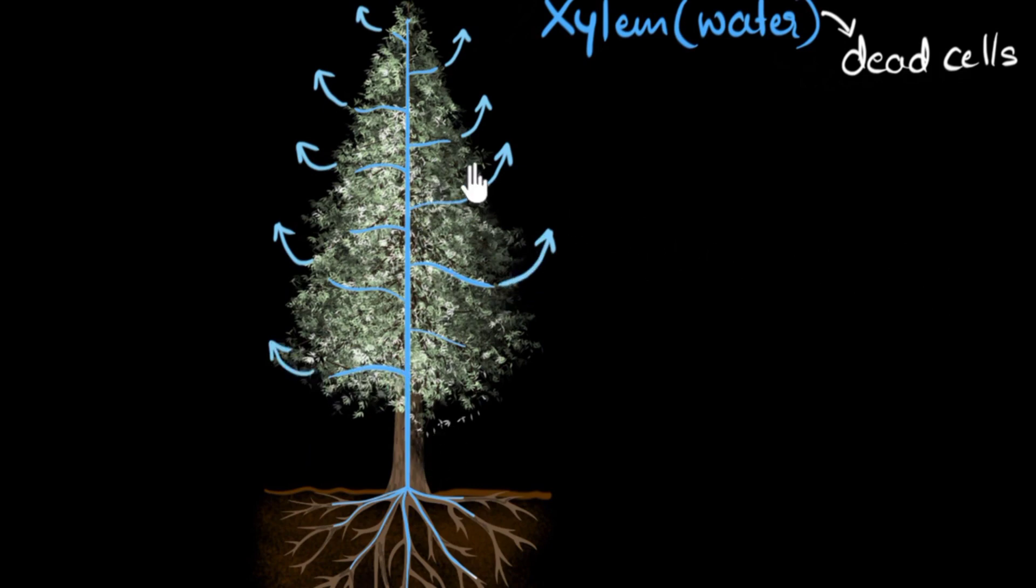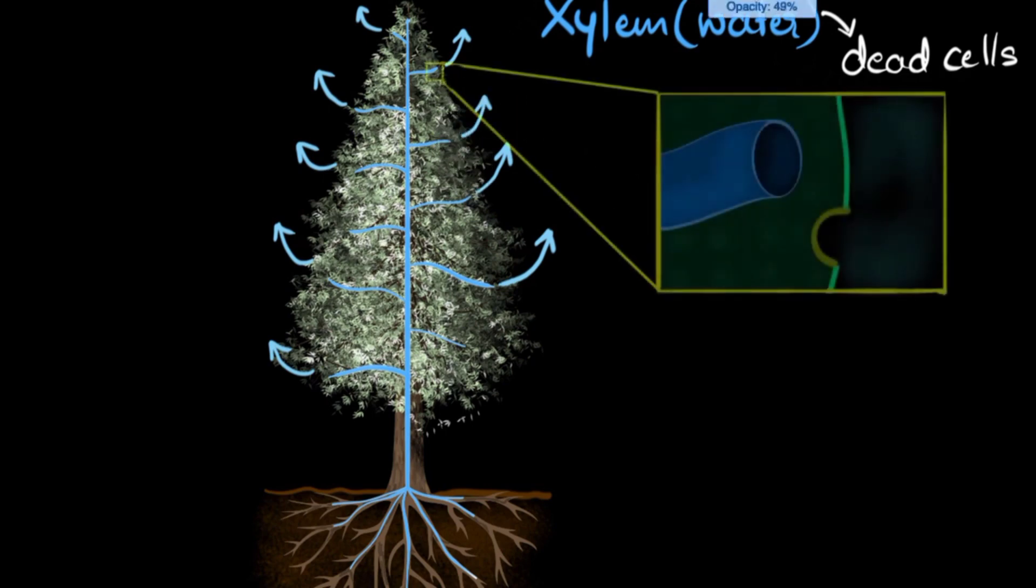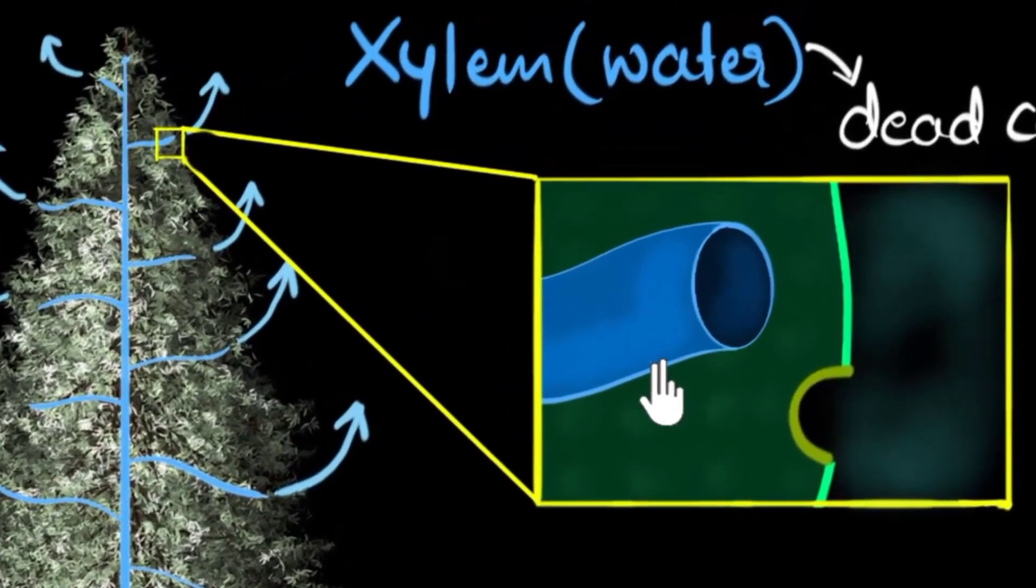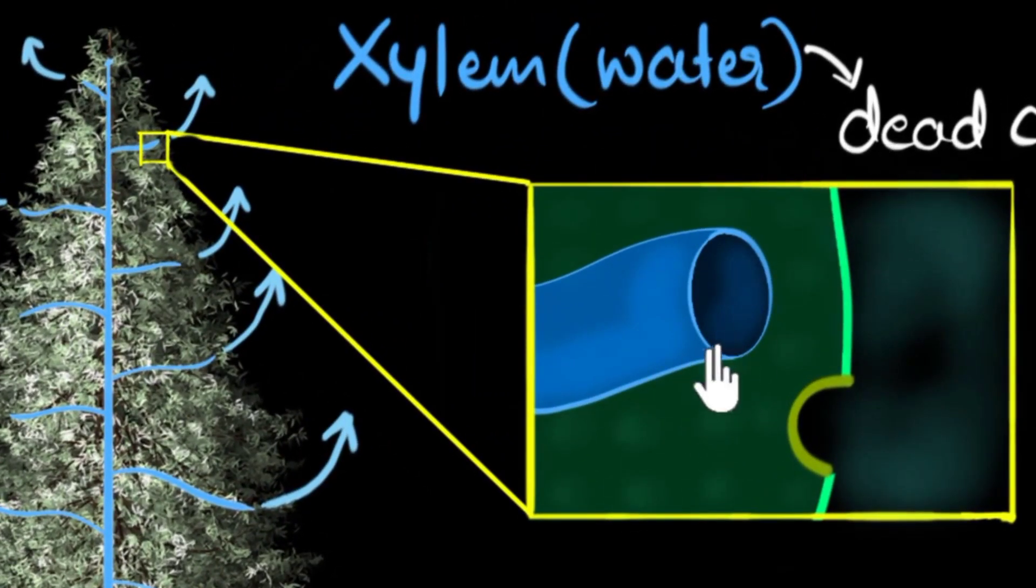Well, to figure that out, let's zoom into one of these leaves. So let's say that this is that same xylem tissue that we just talked about, made of dead cells. And let's say this is one of the leaves, highly magnified view, you imagine. And this is one of those pores, the stomata, through which the water can go out.